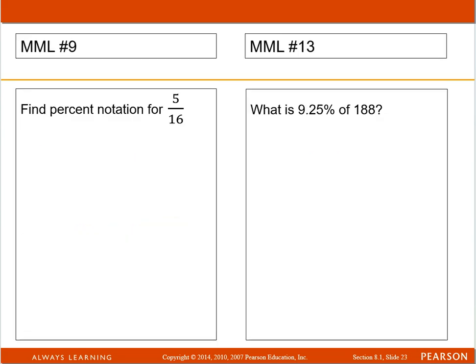Number nine, find percent notation for 5/16. So just take the 5/16, punch a 5 in your calculator, then hit the division sign, and then hit 16. It's always the numerator divided by the denominator.